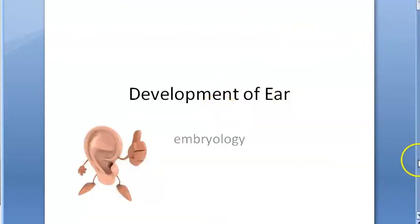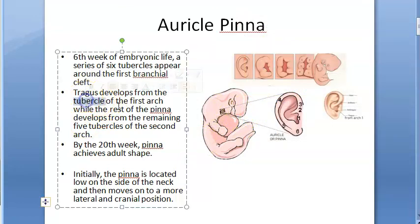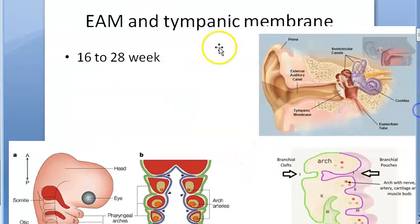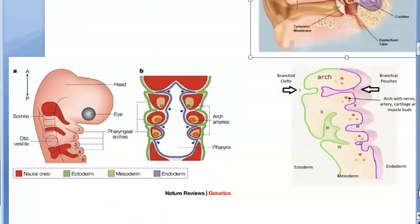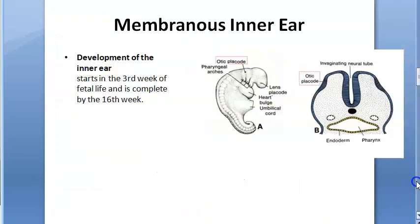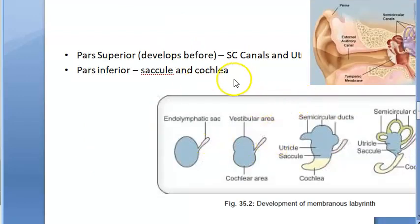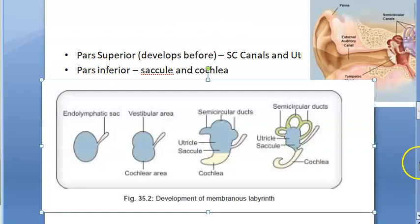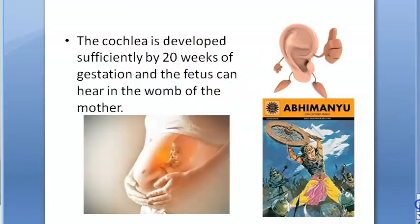Let's recap: the pinna/auricle develops from six tubercles or hillocks - the tragus is from the first arch; the external auditory meatus and tympanic membrane develop next - the tympanic membrane has all three layers: ectoderm, mesoderm, endoderm; the middle ear cleft develops from the tubo-tympanic recess; the malleus, incus, and stapes are all from mesoderm; the membranous inner ear develops from otic placode → otic pit → otic vesicle/otocyst; pars superior develops before pars inferior; and the cochlea is sufficiently developed by 20 weeks of gestation.